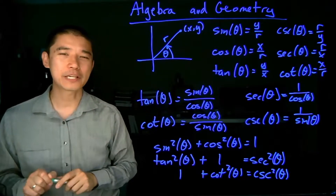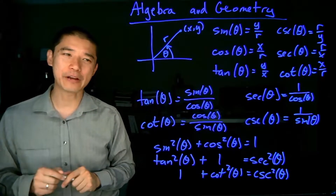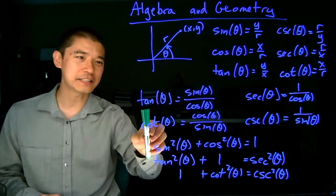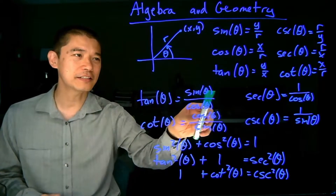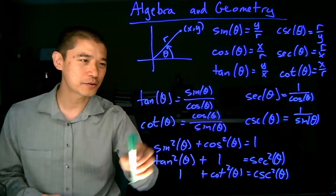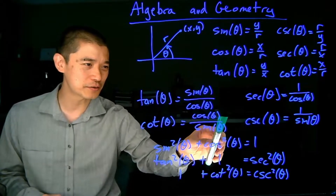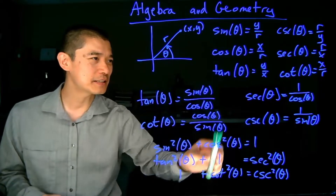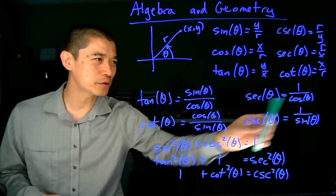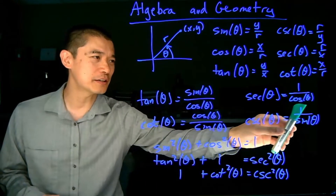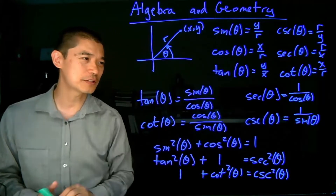From this, we can then do a bunch of algebra to verify these identities. Tangent theta is sine theta over cosine theta, cotangent theta is cosine theta over sine theta, secant theta is 1 over cosine theta, and cosecant theta is 1 over sine theta.